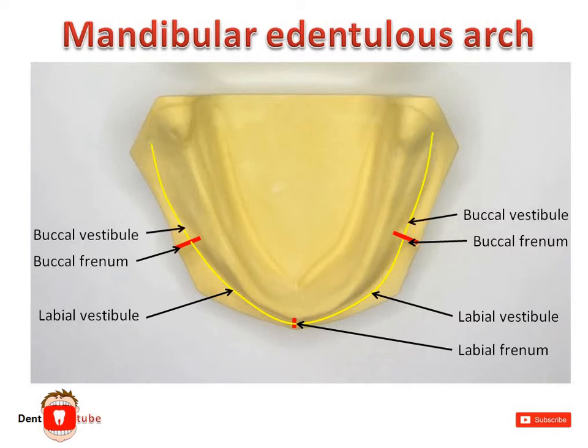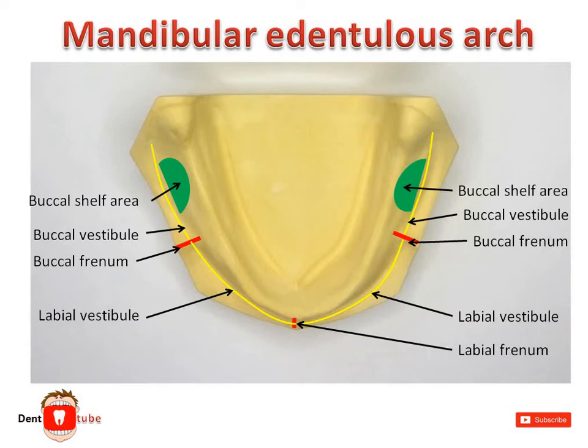The area between the buccal frenum and the anterior border of masseter is the buccal shelf area. Its boundaries are: medially the crest of alveolar ridge, distally the retromolar pad, and laterally the external oblique ridge.